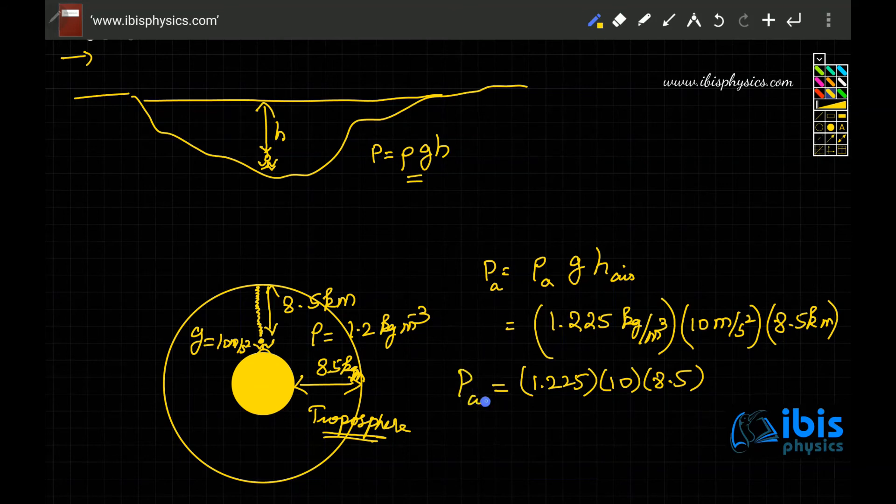This 1.225 multiplied by 10 into 8.5 will give you this pressure due to air column above us - this is called atmospheric pressure. The unit of pressure is pascal. 8.5 kilometers we said, right? Kilometer means we'll have to write 10 power 3 meters, because one kilometer is thousand meters - thousand means 10 power 3 meters.